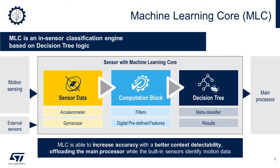As a starting point, our latest IMUs with machine learning core benefit not only from the sensor data coming from the accelerometer and gyroscope, but also allow the usage of external sensors connected to the IMU through an auxiliary I2C bus. From there, the sensor data flows into the computational block of the device, benefiting from filters such as high-pass, band-pass, and second-order programmable digital filters, as well as features that can be selected to better describe the data pattern captured.